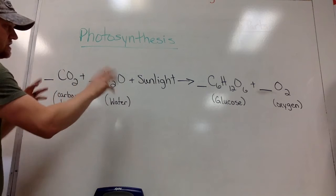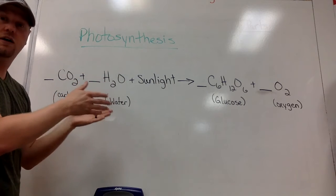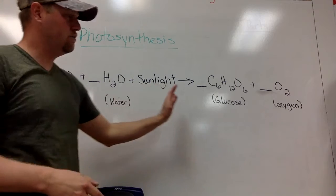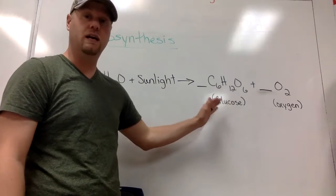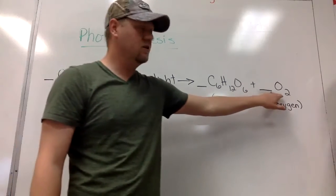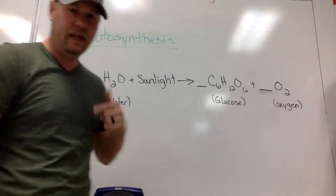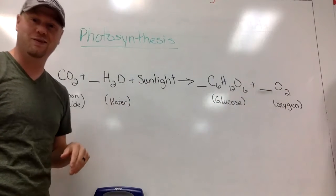When we take all those things and mix them together within the chloroplast of a plant, it is going to produce a substance called glucose, which is a type of sugar, and that's the food the plant eats, and it's also going to create oxygen. That oxygen is really good for us because that's what we end up breathing.